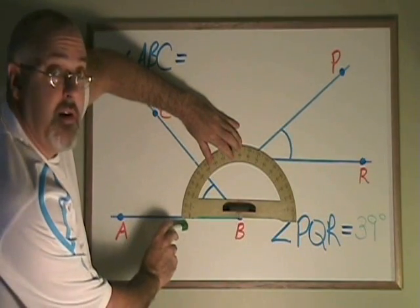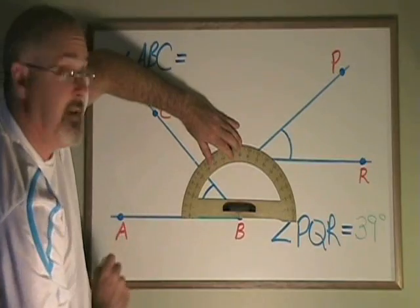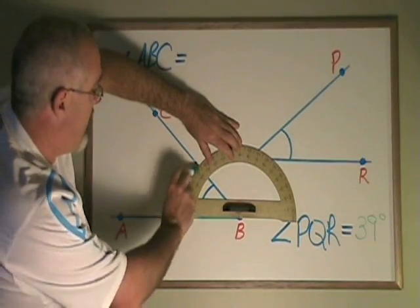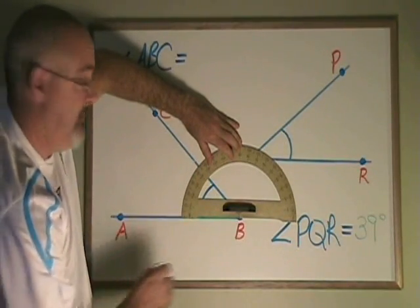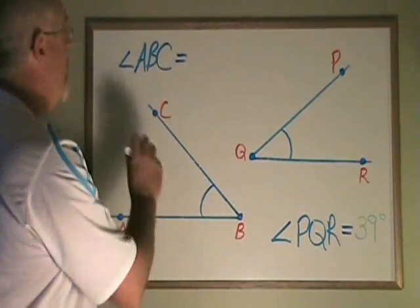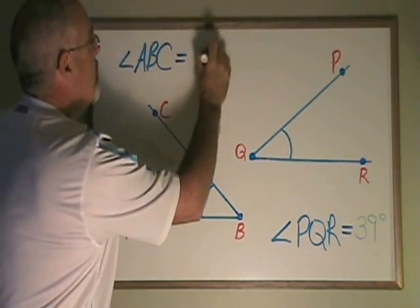I find myself counting up from zero using the outer numbers this time, and I can measure the angle as being about 44 degrees. Angle ABC is 44 degrees.